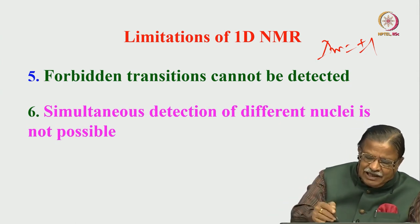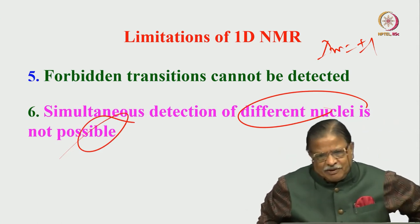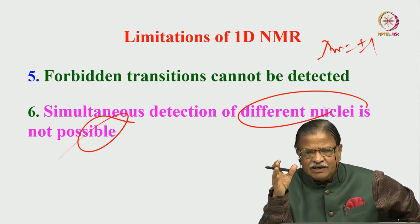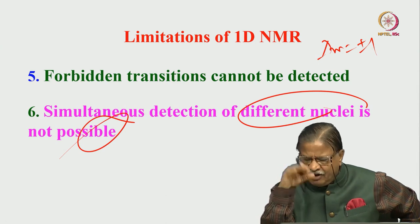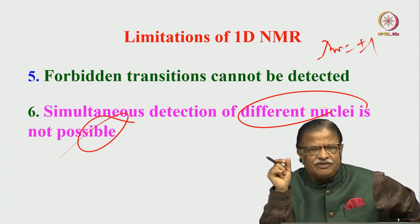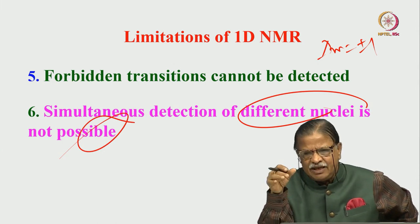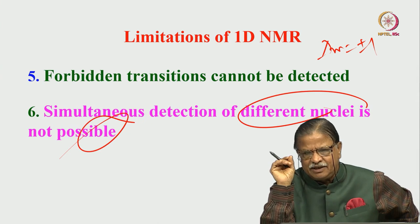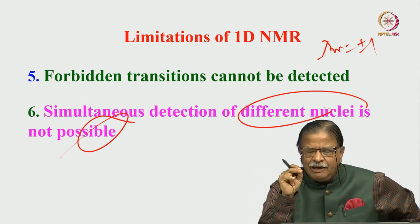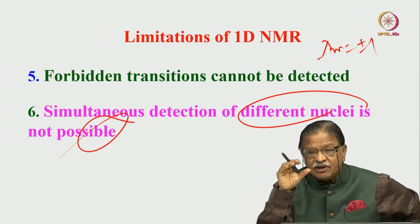Another limitation is that simultaneous detection of different nuclei is not possible. If I want to take a 1D NMR spectrum of proton at 400 MHz, I tune the probe and get only the proton signal. If I have to do carbon-13 NMR on the same spectrometer, I have to change the frequency of the probe. Both proton and carbon-13 cannot be detected simultaneously. These are all limitations of 1D NMR — they put certain constraints on what you can do.